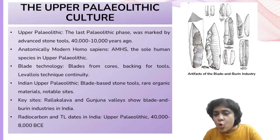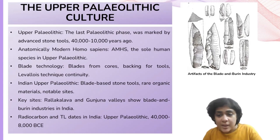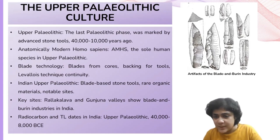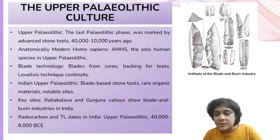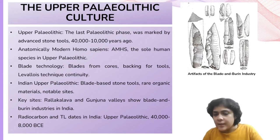Upper Paleolithic toolkits also included a variety of flake and core tools such as side scrapers, end scrapers, notch scrapers, discoid, and unifacial and bifacial blade-plate points. Some backed blades might have been used as barbs for harpoons. Fine-grained rock was the primary material used for making stone tools.